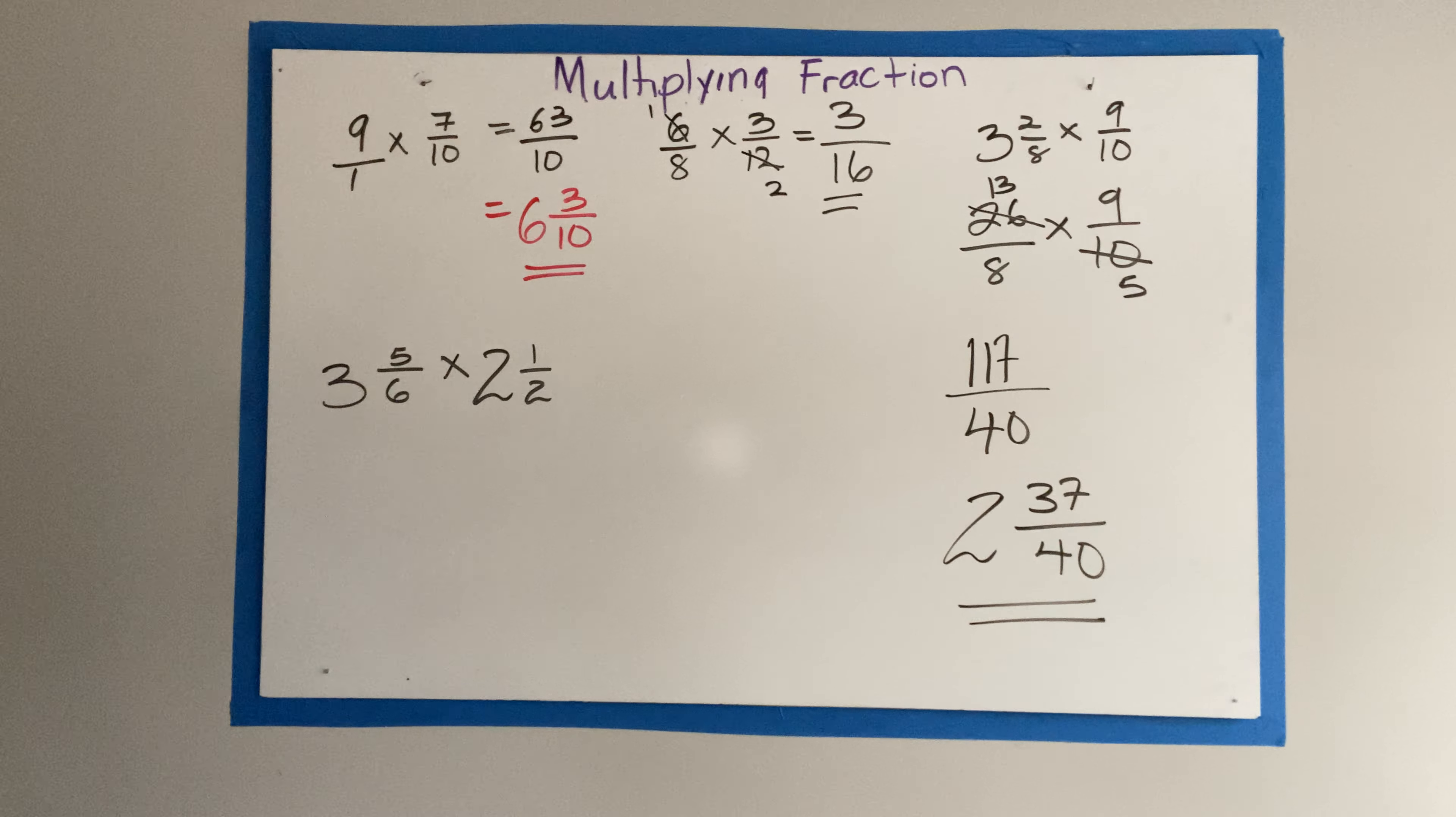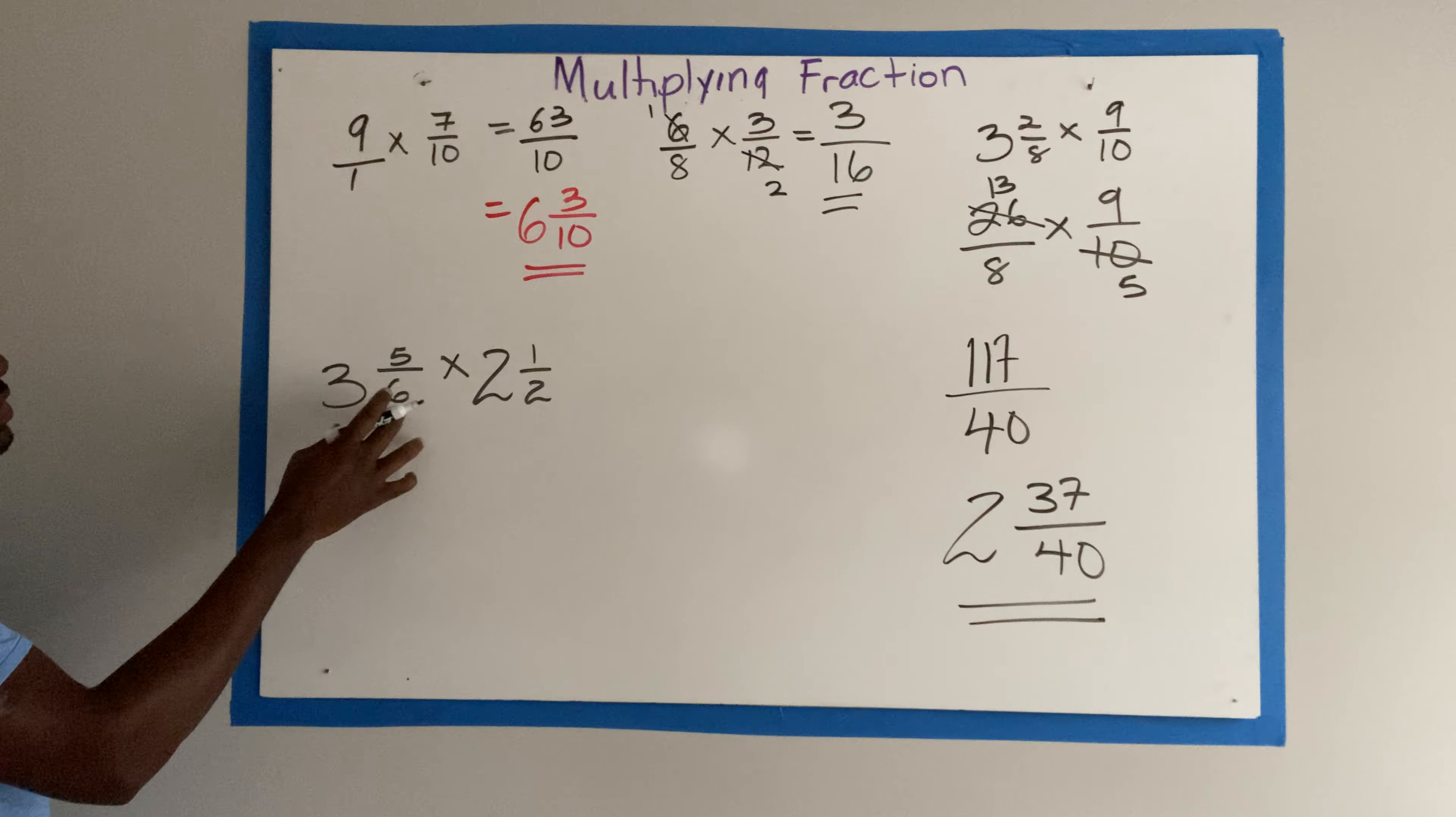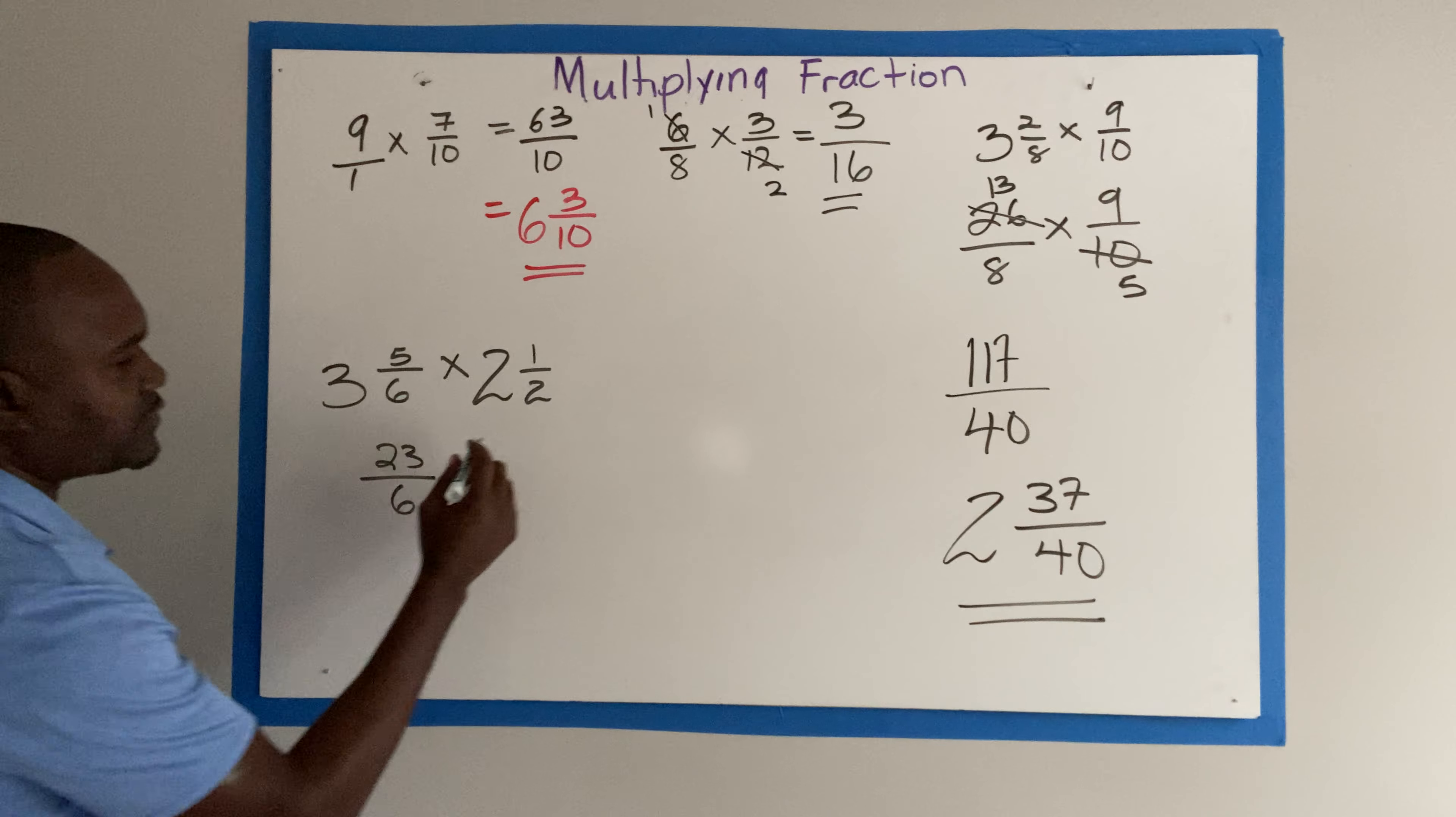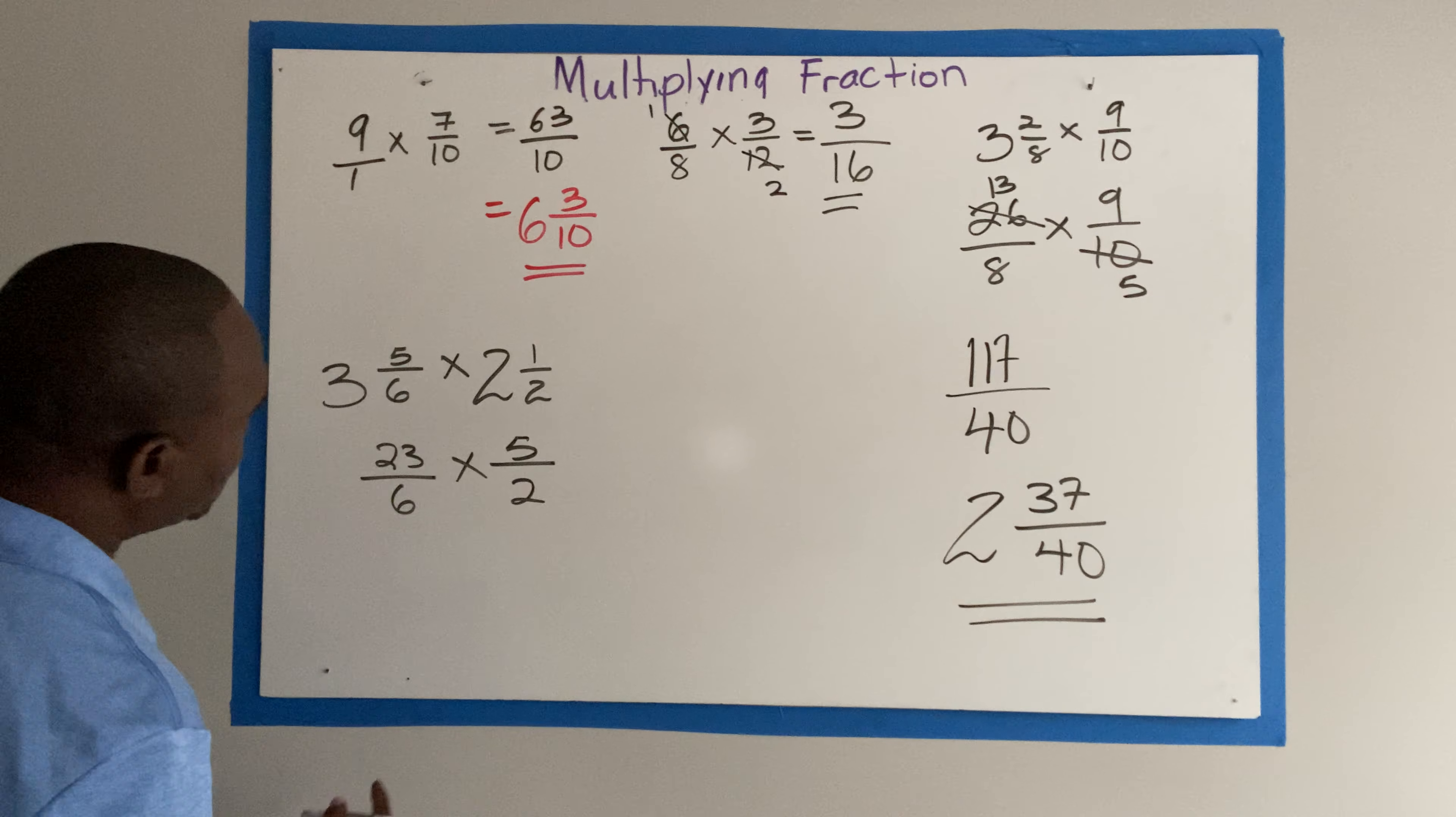Let's look at this one real quick. Here we have a mixed fraction. So we're going to turn it into an improper fraction. 6 threes, 18 and 5, 23 over 6 times 2. 2 is 4 and 1, 5. So that's 5 over 2. We check for cancellation. We can't cancel. So therefore, we multiply across.